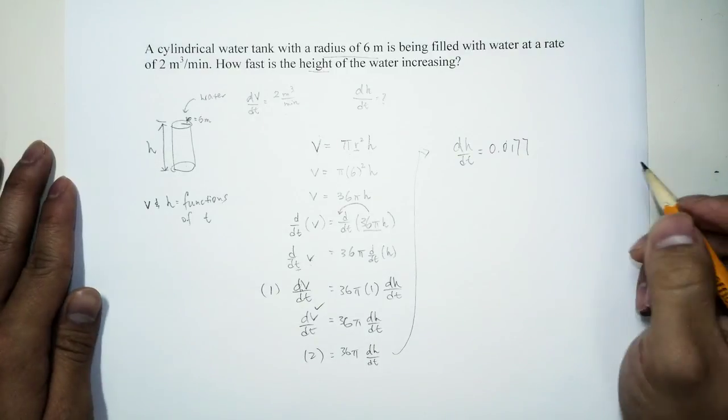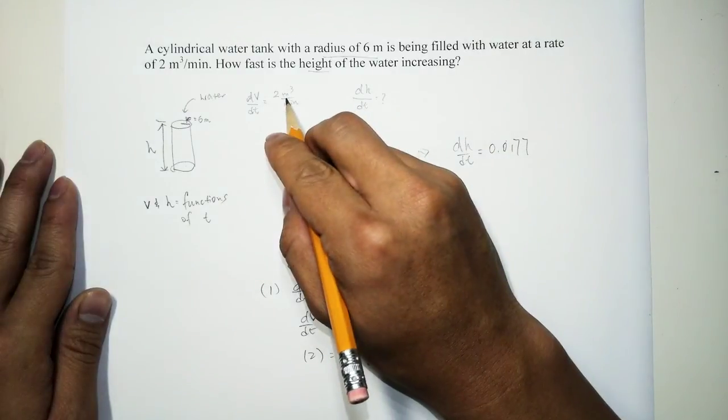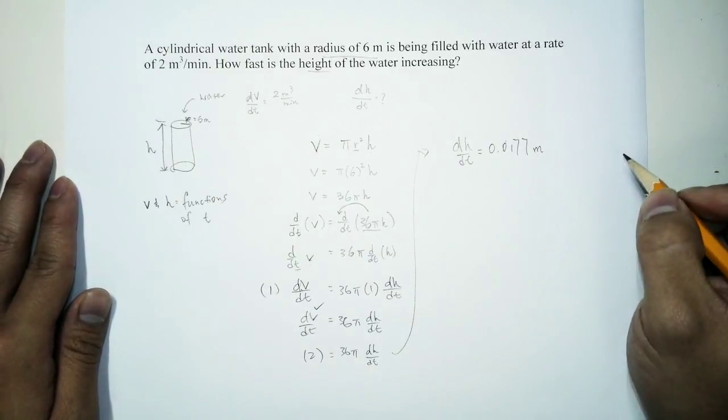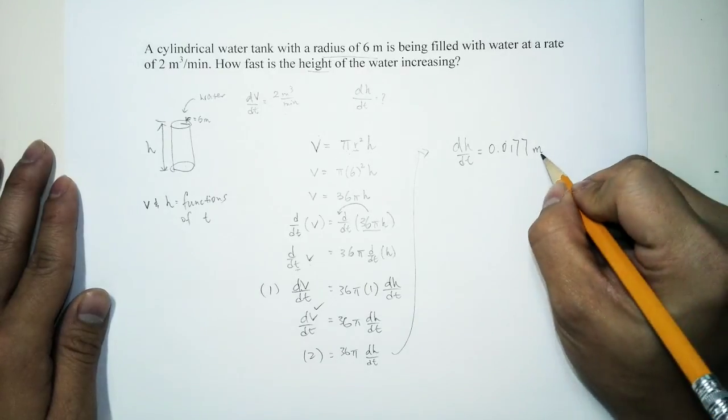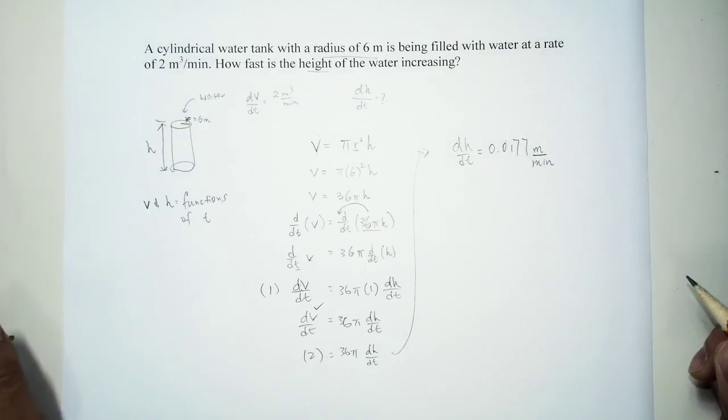And the unit for this change of height over time. Well, since we use meter as unit right here, so meter will be the unit for height over minute. So this is how we calculate this problem, solve this problem.